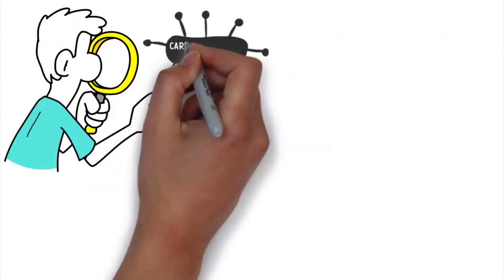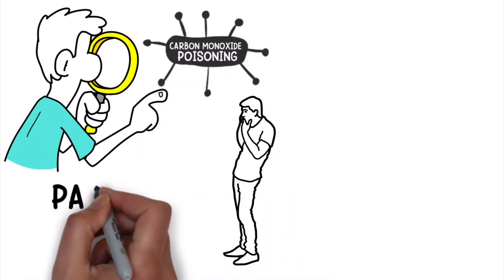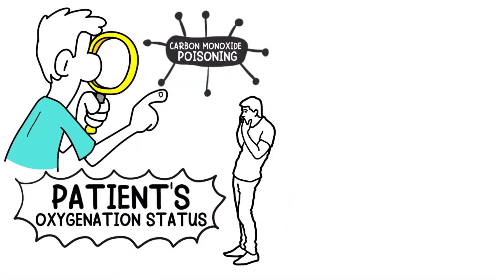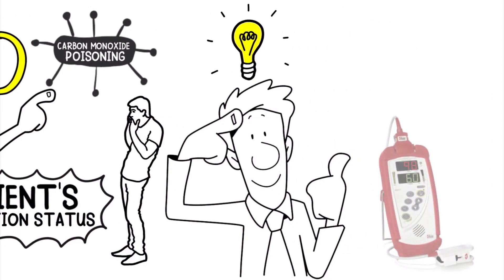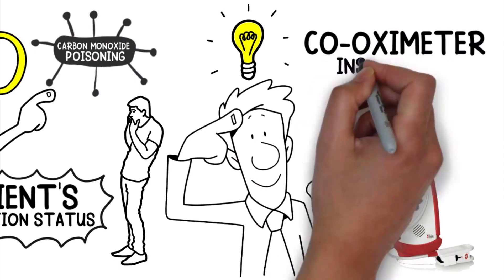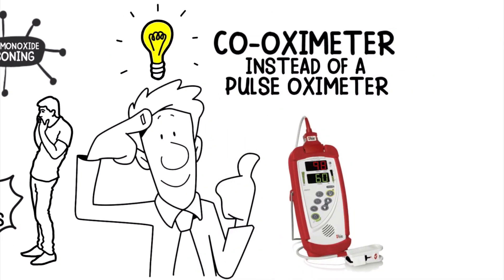If carbon monoxide poisoning is suspected, it's important to monitor the patient's oxygenation status. However, here's another important tidbit to remember. The patient's oxygenation should be analyzed with a CO oximeter instead of a pulse oximeter.